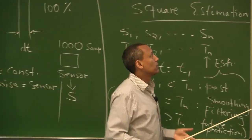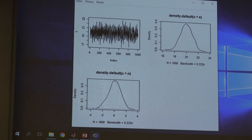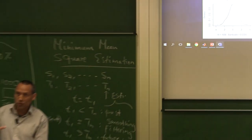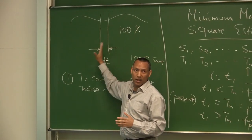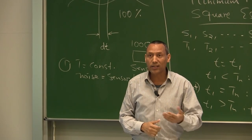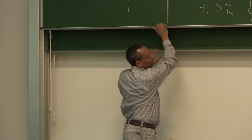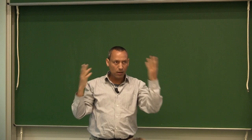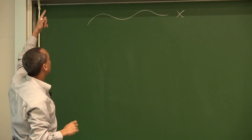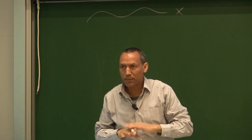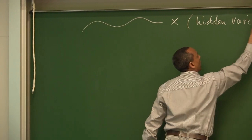Or it could be the case that the sensor introduced its own noise, but at the same time the temperature might have changed. So we have two sources of uncertainties: the uncertainty arising from the temperature potentially changing during this period, and the uncertainty arising from the sensor itself. With minimum mean square estimation, we try to minimize our uncertainty about the temperature. Let's call this temperature x — it's called a hidden variable, a variable that cannot be touched.